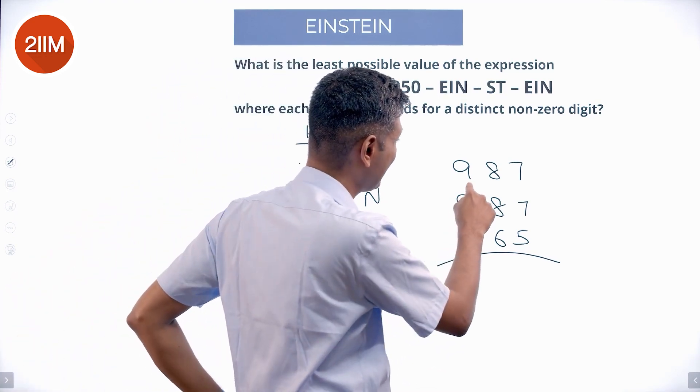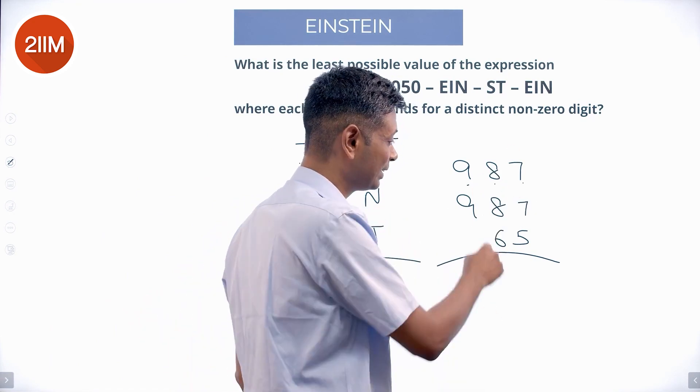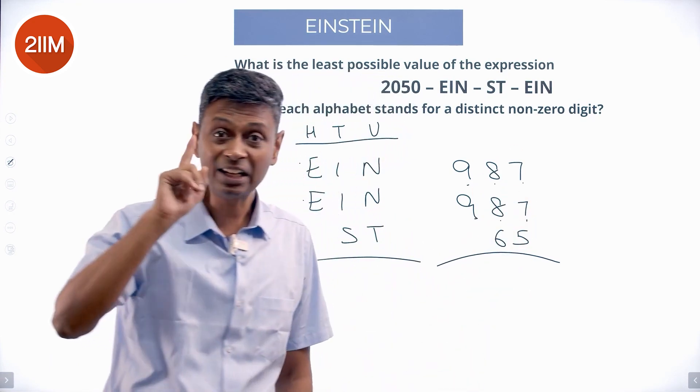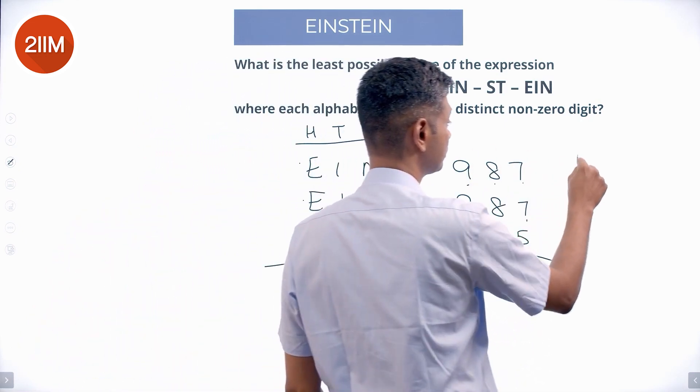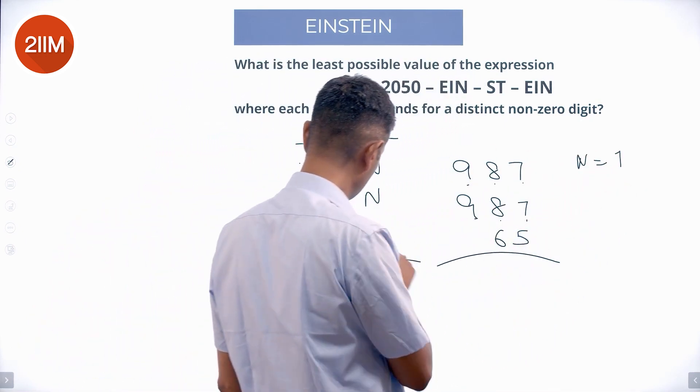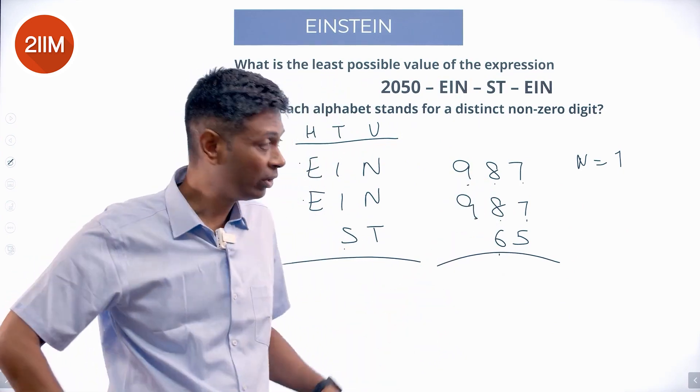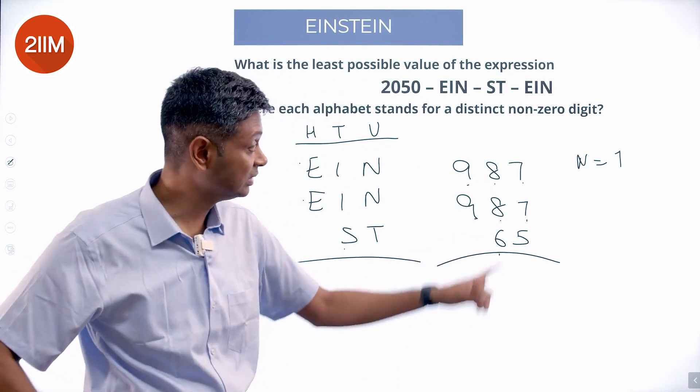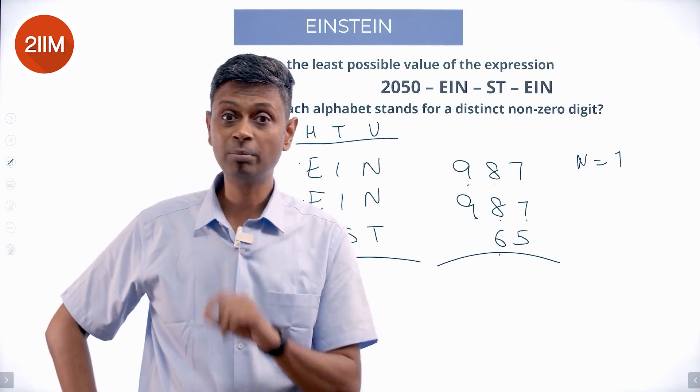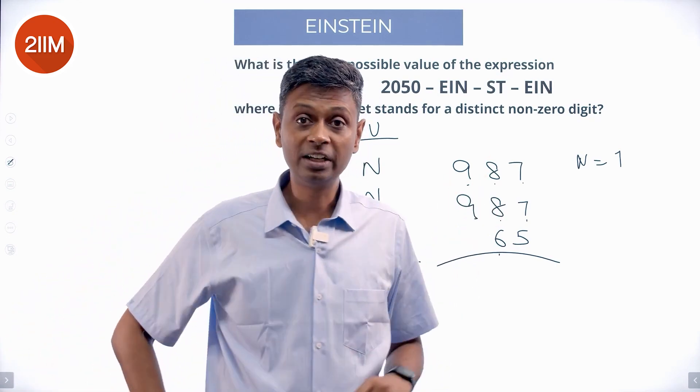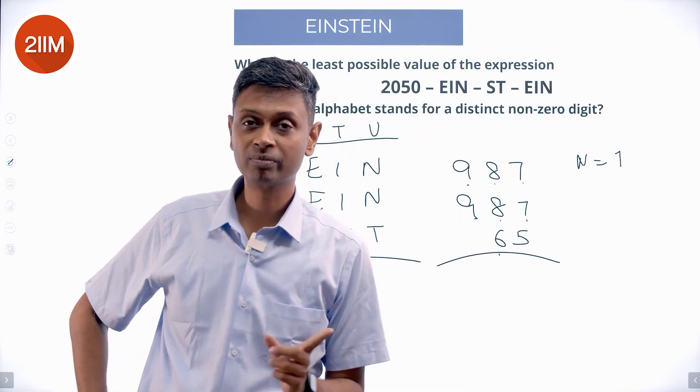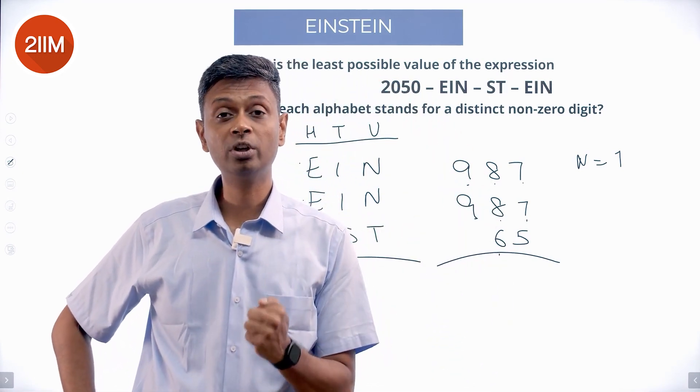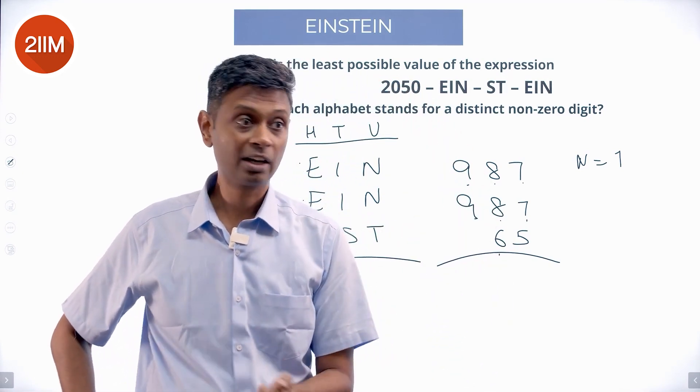It is not correct. Why? Because I put 987, 987. EIN is very high, but because I have put N as 7, I am not able to put S as 7. This is in the tens place, that is the units place. This doesn't help me. 987 here - the 7 gets counted as 7, this 6 gets counted as 60. The tens place number is going to have a massive impact compared to my units place.